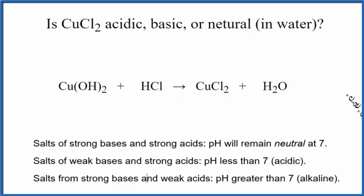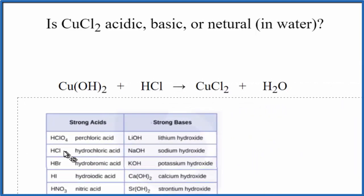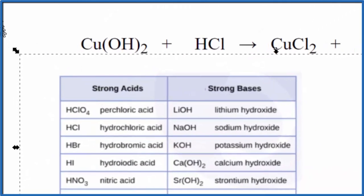After we have the equation we need to figure out the strength of the acid and base involved. This chart is really useful, this is a good one to memorize. We look at the chart and for copper(II) hydroxide we don't see that on our list of strong bases, so this is going to be a weak base.